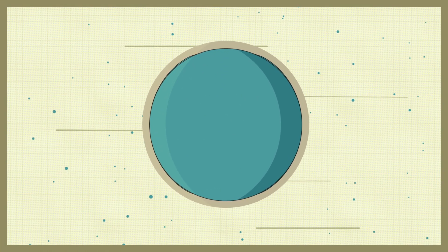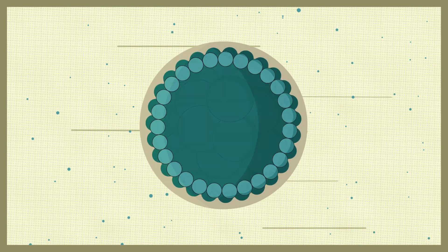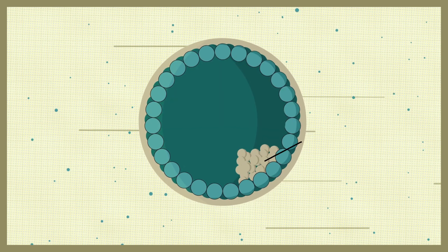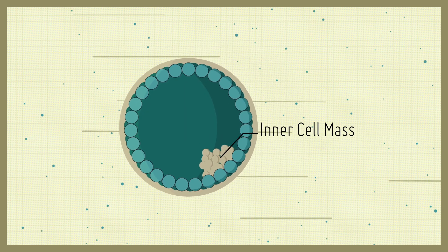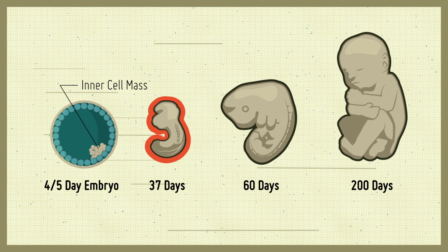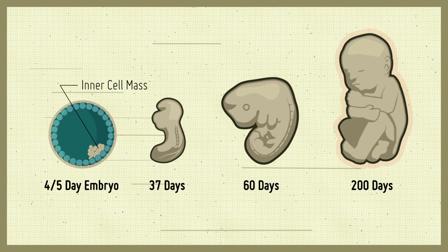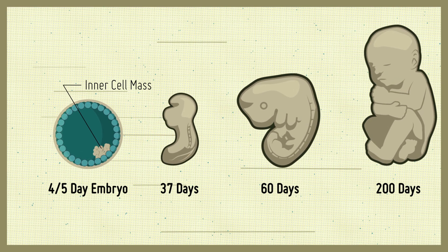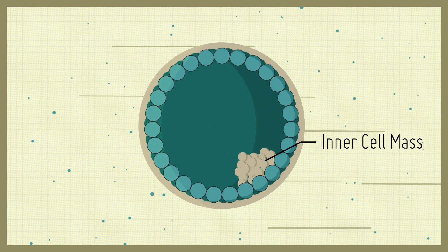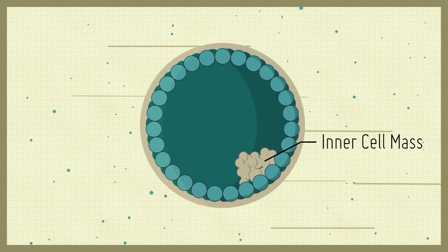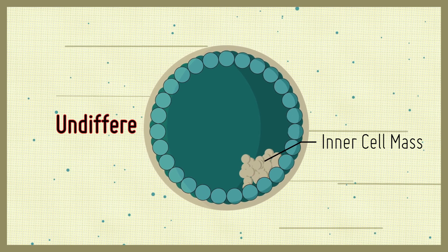Following fertilization, the developing embryo contains a group of cells known as the inner cell mass that will eventually go on to form all tissues of the body. However, at this early stage of development, these cells have not yet committed to become a specific type of cell and are said to be in an undifferentiated state.